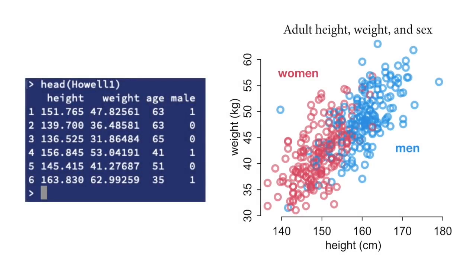We're going to come back to the Howell height-weight data and introduce two more variables in this lecture, focusing on one: the sex of the individual, whether they're male or female. Looking at the Howell data for adults only — individuals 18 or older — there's a column for age and a column of 0-1 indicator variable indicating whether the individual is male. On the right I've plotted the relationships among height, weight, and the individual's sex. What I want us to do is model the influences of height and sex on weight in adults in this Kalahari population.